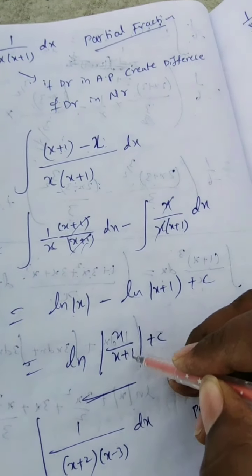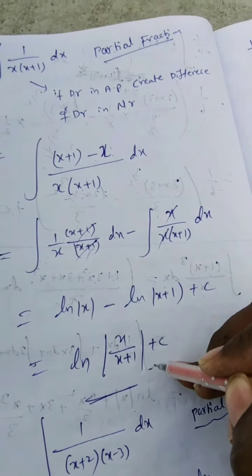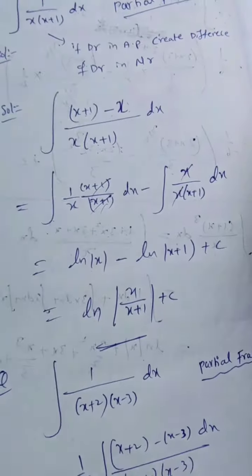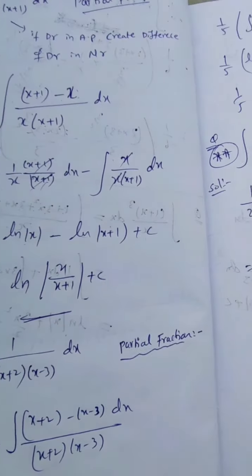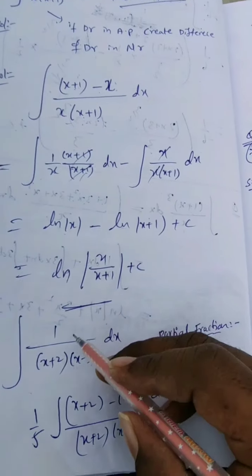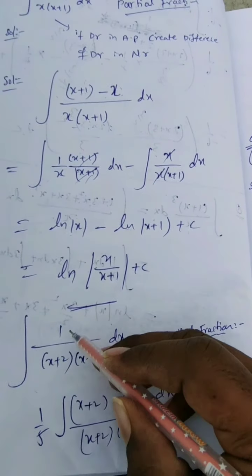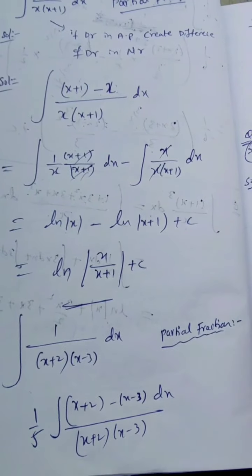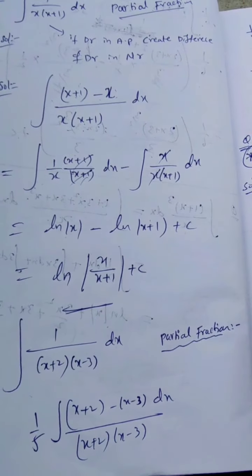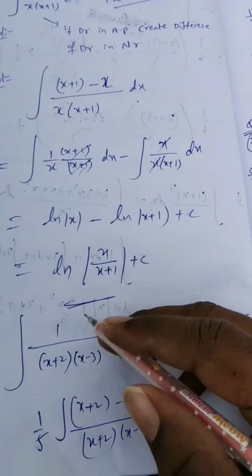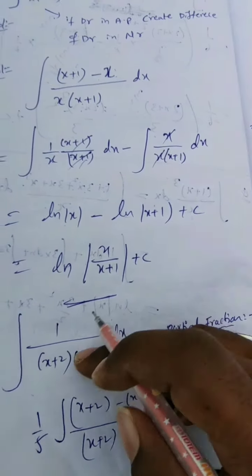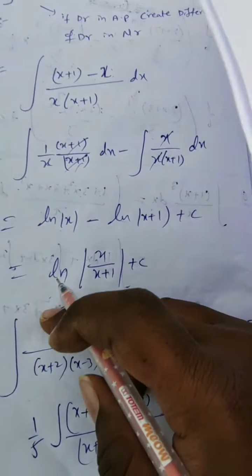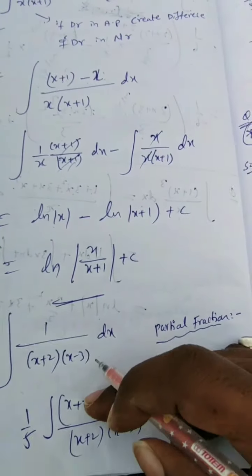Using log a minus log b equals log a by b, the answer is ln|x upon x plus 1| plus c. Now let us go for another question: integration of 1 by x plus 2 into x minus 3 dx.